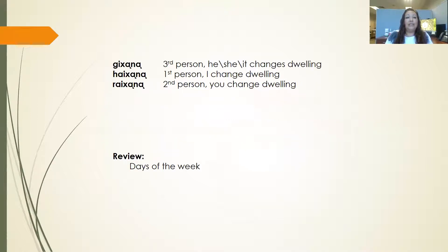So gi'chana is your third person verb — he, she, or it changes dwelling or moves. Hai'chana is first person: I change dwelling. Rai'chana is second person: you change dwelling.